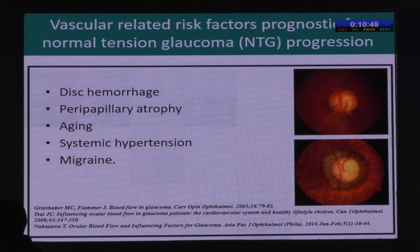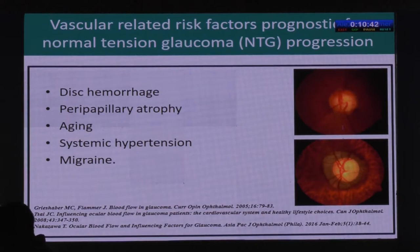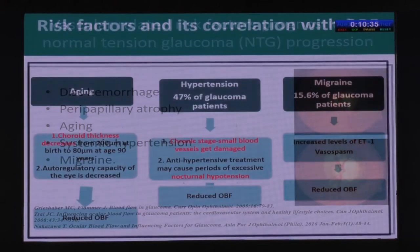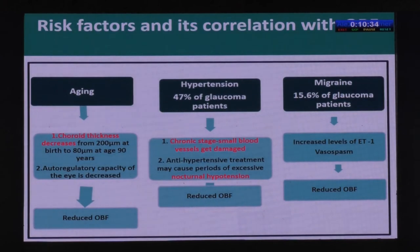Clinically we can see some correlation between vascular factors and glaucoma when we observe a disc hemorrhage or peripapillary atrophy. What we don't always appreciate are the roles of aging, systemic hypertension, and migraine — but they do have a role.